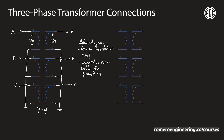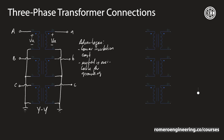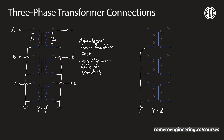The next connection is the Y-delta configuration. The primary is connected in Y configuration, so we take all the neutrals together — this neutral doesn't necessarily have to be connected to ground. We have A phase, B phase, and C phase on the primary side.